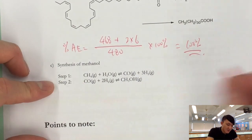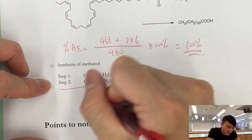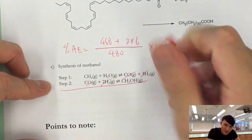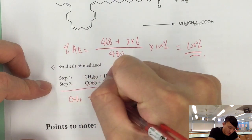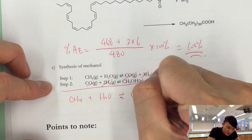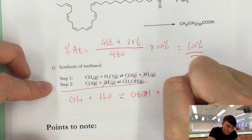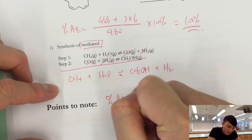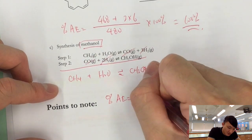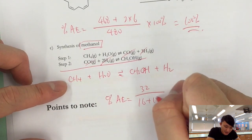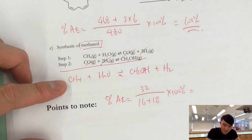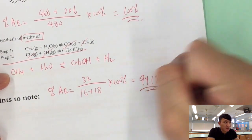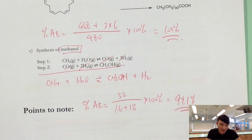Now, synthesis of methanol. First of all, perhaps we need to combine the two equations together. Carbon monoxide will be cancelled out. Hydrogen 2 will be cancelled out here. And this one, there should be one hydrogen left. So CH4, H2O, CH3OH, and one more of hydrogen. So we are making methanol, right? So percentage AE equals to methanol relative formula mass, which is 32 divided by 16 plus 18 times 100%, which gives you 32 divided by 34, 94.1%.